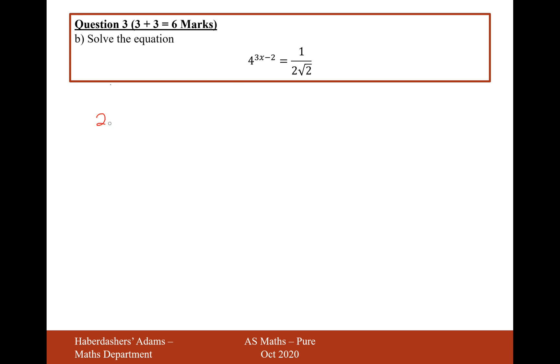The base of this question here is 2, so 2^2 is 4, so it's going to be (2^2)^(3x-2) equals... and then to make this expression on the right-hand side, it's going to be 2 to some power. Now a half is 2^(-1), 1/√2 is 2^(-1/2), so you add those powers together because they're being multiplied, and it'll be -3/2.